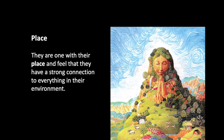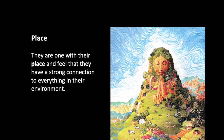Place: they are one with their place and feel a strong connection to everything in their environment, not seeing a strong separation between themselves and the objects, plants, and surroundings around them. Animism: they give living characteristics to otherwise inanimate things like rocks and trees, and feel connected to those objects. Orality: because they don't write down their history, they're forced to remember everything — therefore they have excellent memories. They only know what they need to know and eliminate unnecessary information. Whereas we have to find a needle in a haystack, they only have the needle — only the information they need.